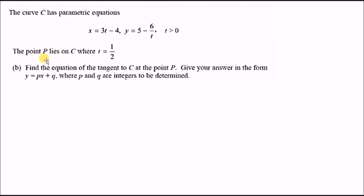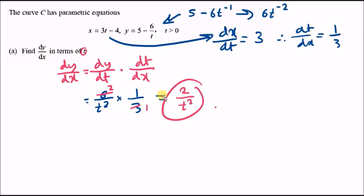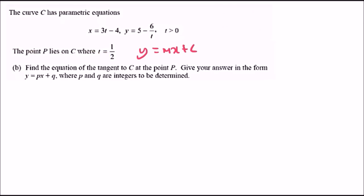Part B: the point P lies on C where t equals one half. Find the equation of the tangent to C at point P. We use the straight line equation y equals mx plus c, where m is the gradient. From Part A, dy/dx equals 2 over t squared, so at t equals a half, m equals 2 over (1/2) squared.